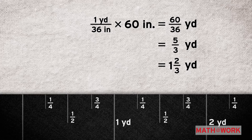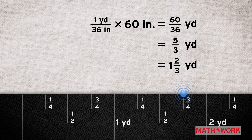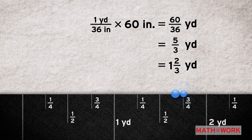But this fabric is only sold by the one-fourth yard, so we'll have to buy 1 and 3 fourths yards, since it's the closest fraction that is both divisible by one fourth and is greater than 1 and 2 thirds.